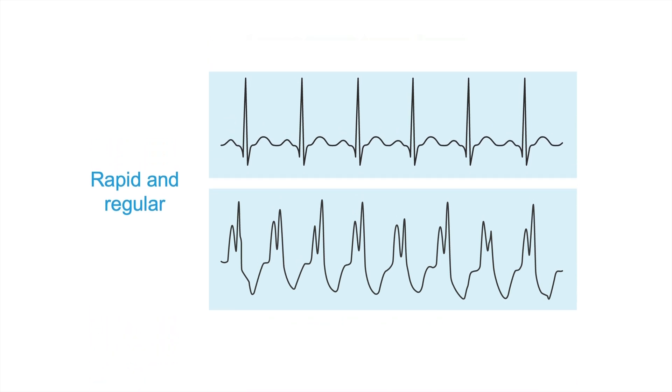Rapid and regular tachycardias can come in two different forms. One is a broad complex tachycardia, and the other one is a narrow complex tachycardia. Let's check them out.